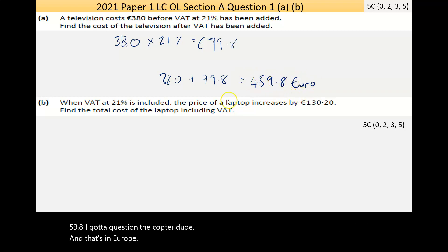Part B here says when VAT at 21% is included, the price of a laptop increases by €130.20. Find the total cost of the laptop including VAT. This is where things get a bit more complicated. I don't know the price of the laptop, so I can call that whatever I want. I can call that x equals price of laptop.